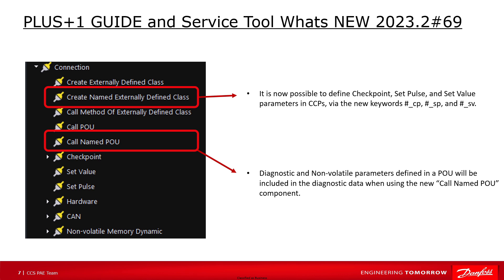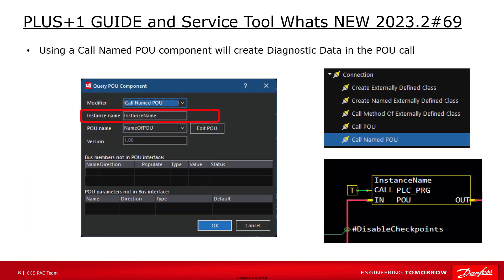To define diagnostic data in a POU there are multiple options available. The new component call named POU provides diagnostic data in the POU directly. In addition to the standard call POU component, the user can define an instance name which is used in front of the diagnostic data, similar to adding a namespace to a page in Guide. It also provides an optional bool input named disable checkpoints — if set to true, checkpoints of the POU instance will not be added to the diagnostic data.